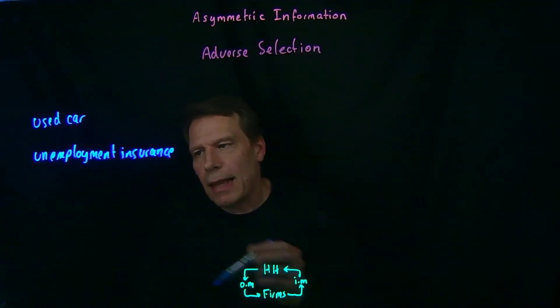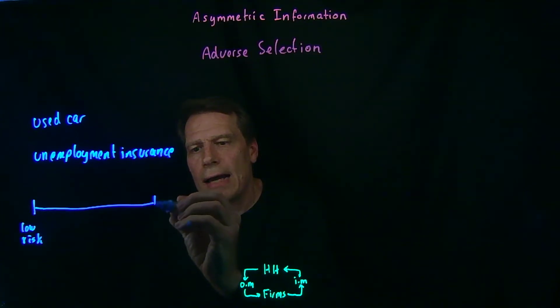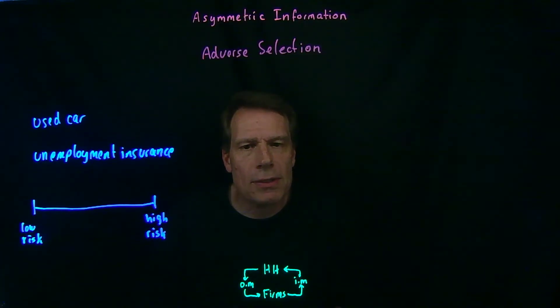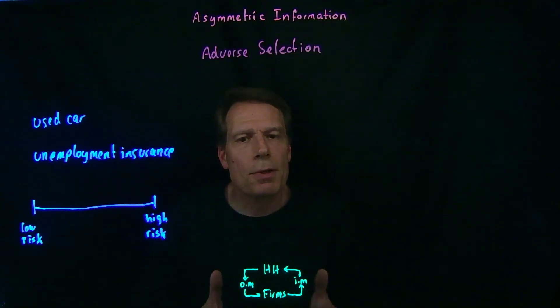So why might that be the case? Well, think about lining up people from those who have a very low risk of being unemployed to those who have a very high risk of being unemployed. There are all sorts of reasons that different people will lie on different parts of this continuum. Part of it might be that certain jobs have higher risks of unemployment than other jobs. I'm a tenured university professor - the chance that I will lose my job is essentially zero, so I would be on this end of the spectrum just because of the job I have. Other jobs are more fluid. New technologies make certain jobs obsolete. Some jobs come and go with the business cycle.